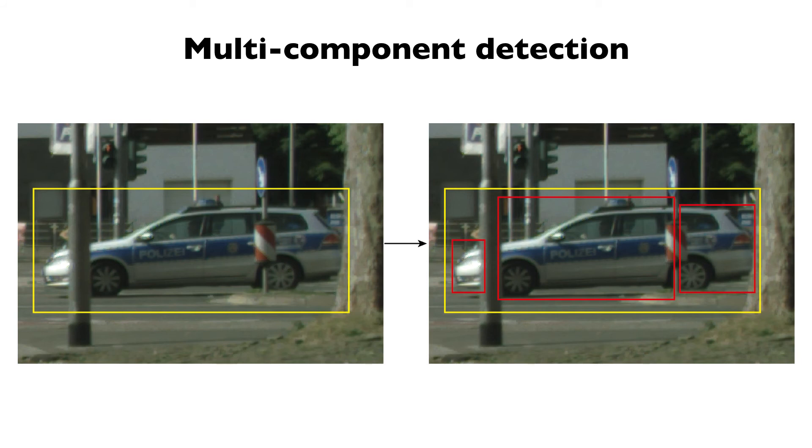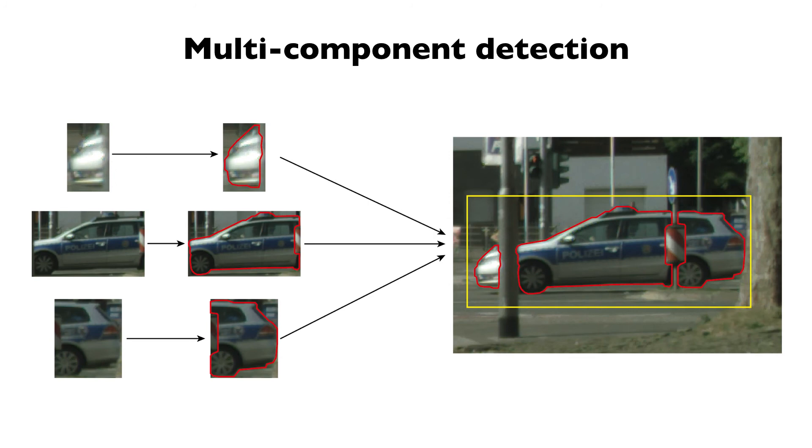To overcome this problem, we propose to use another detector to find the object components within the object box. For example, we find three components of the car within the bounding box. For the detected components, we use DeepSnake to segment each of them and then merge the component contours as the segmentation result of the car.